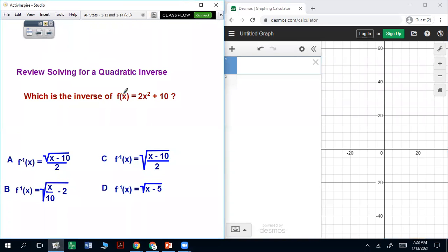We're going to follow the same steps as we did for the linear. So I'm going to call that y, and we're going to switch it. x equals 2y squared plus 10.